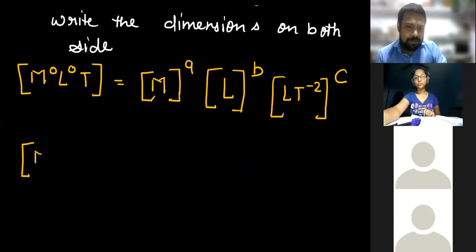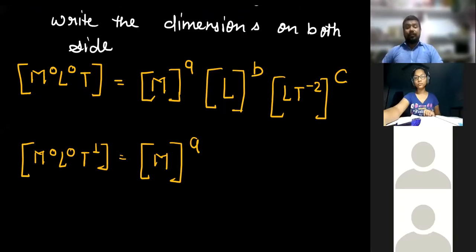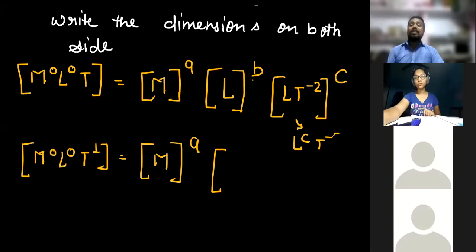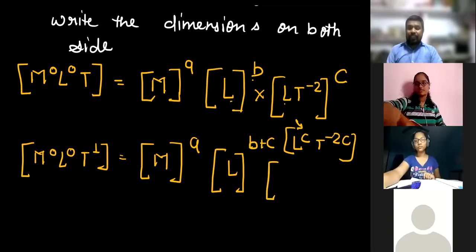So from this we get: M⁰L⁰T¹ = M^A · L^B · L^C · T^(−2C). Since L^B and L^C are multiplied, their powers add. So: M⁰L⁰T¹ = M^A · L^(B+C) · T^(−2C). Now we compare powers of dimensions from both sides.